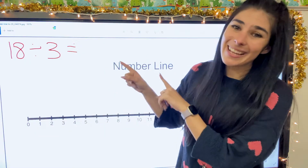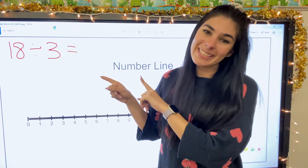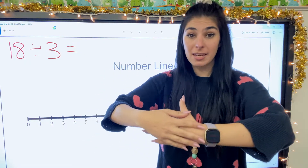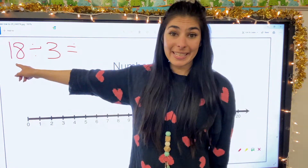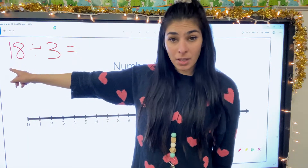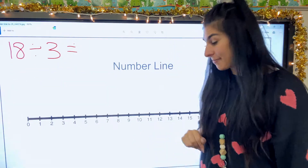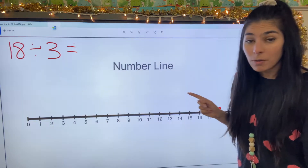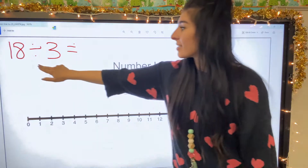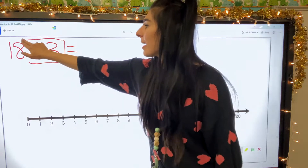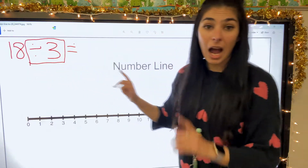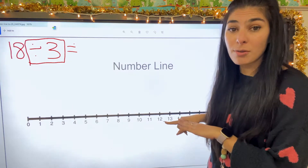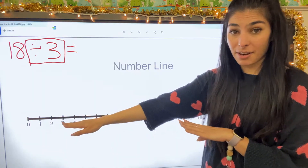Let's do another one. Next equation, we have 18 divided by three. So I'm looking for my dividend, my big number, which is 18. So on my number line, I'm going to start at 18 right here. Now, because we are dividing by three, I'm going to count three little jumps and circle those numbers all the way to zero.